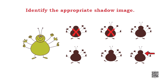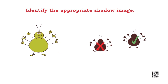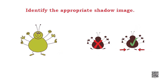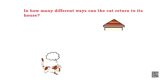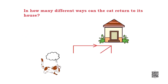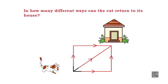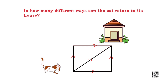Now you understand? So let's look at the remaining pictures carefully and identify the correct picture. Here is a cat. There are many parts in front of him and on the other side of those parts is the cat's house. Now look at these parts and think about how many different ways the cat can return to its home and which is the easiest one.